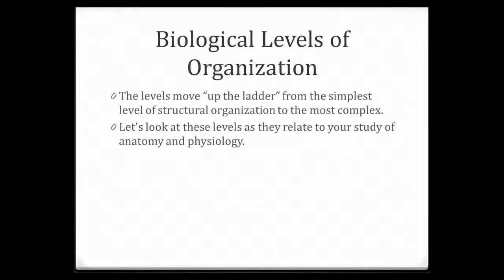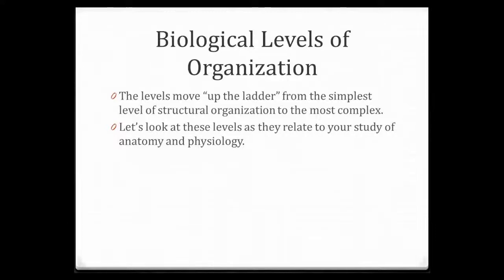The atom is the smallest structure that we can look at. We take atoms, combine those together, and we form molecules. We put molecules together and we form macromolecules — macromolecules are really big molecules. When we combine macromolecules, we form organelles, and with a collection of organelles we form a cell.